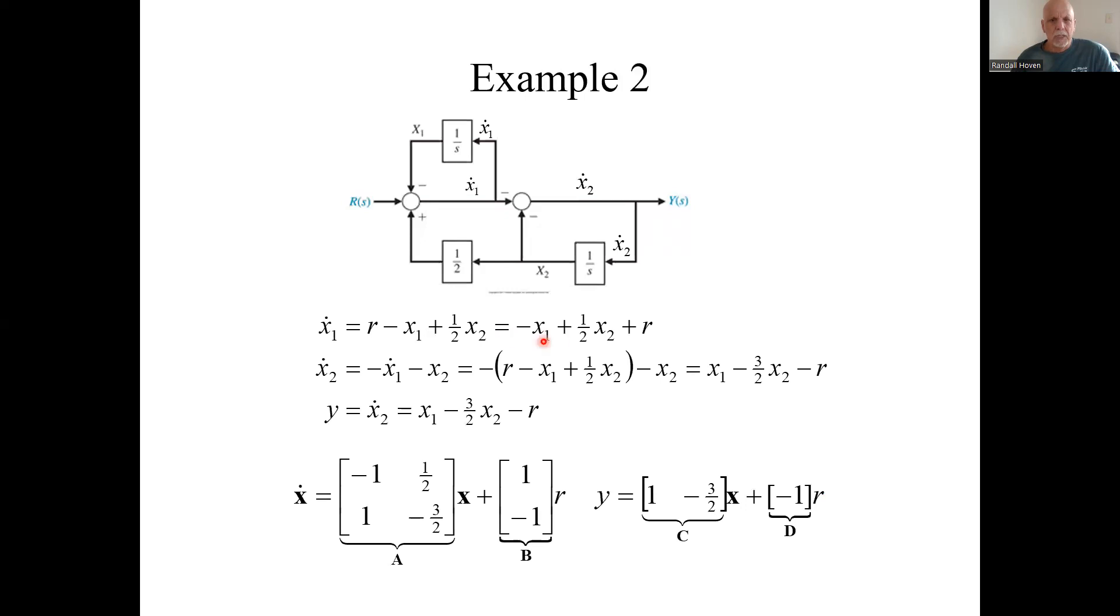x₁ dot equals minus x₁ plus a half x₂ plus r. x₂ dot equals x₁ minus three-halves x₂ and a minus r.